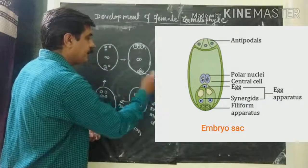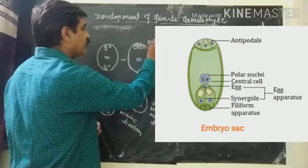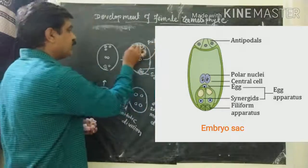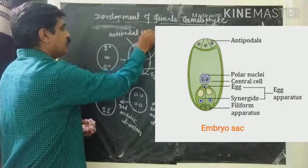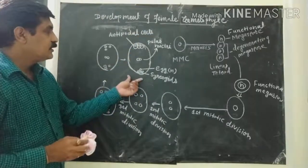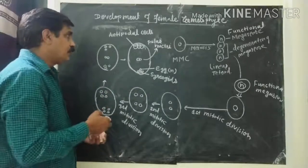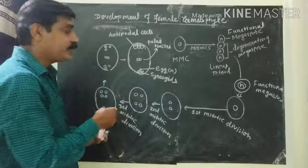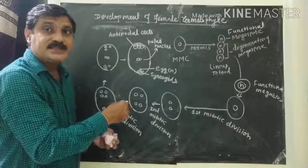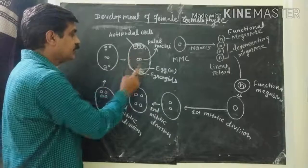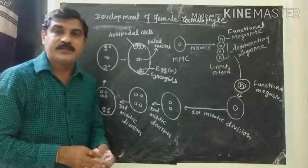The synergids are the supporting cells. The middle large cell is the egg cell, which is haploid. The two central cells are the polar nuclei. The group of three cells towards the chalazal end is known as antipodal cells. Now this structure is a seven-celled and eight-nucleated structure. There are eight nuclei: one, two, three, four, five, six, seven, eight — eight nuclei present. And seven cells: first, second, third, fourth, fifth, sixth, seventh — seven cells with eight nucleated structure.